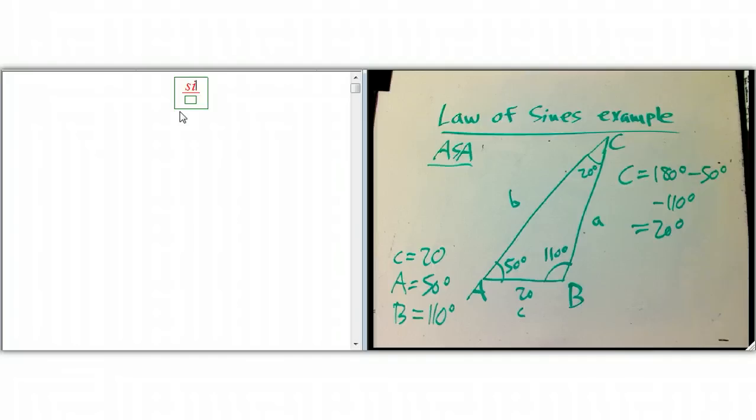So law of sines, remember, says sine A over a. It's one that's very easy to remember, because it's very symmetrical. Sine B over b equals sine C over c. And there's other ways to write it, but that's the traditional way to write it. And in fact, let me write it one other way.